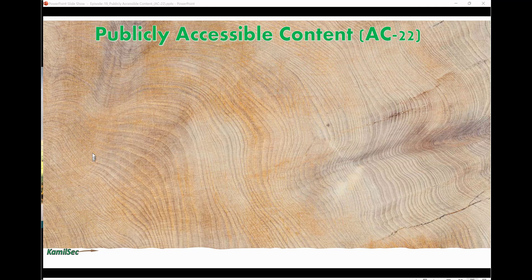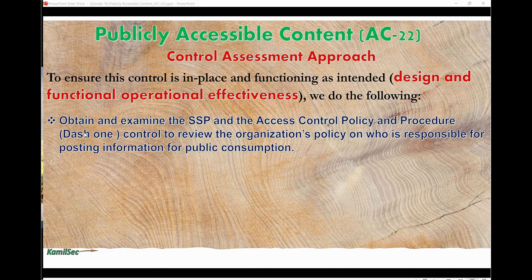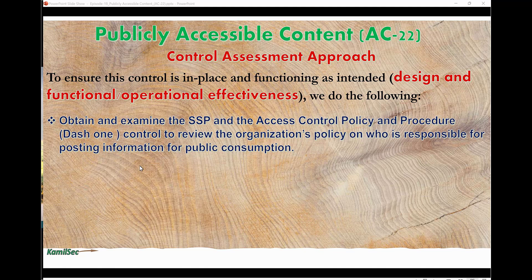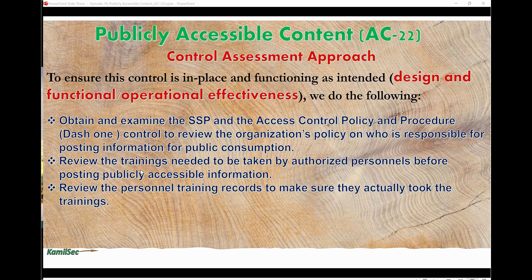Now let's look at the control assessment approach for AC-22. To ensure this control is in place and functioning as intended — that is, design, functional, and operational effectiveness — we do the following. Obtain and examine the SSP and the access control policy and procedure (the dash-one control) to review the organization's policy on who is responsible for posting information for public consumption. Review the trainings required for authorized individuals before they can post publicly accessible information, then review personnel training records to confirm they have actually taken those trainings.